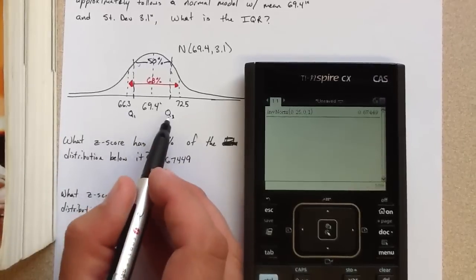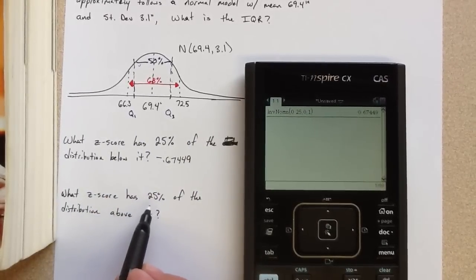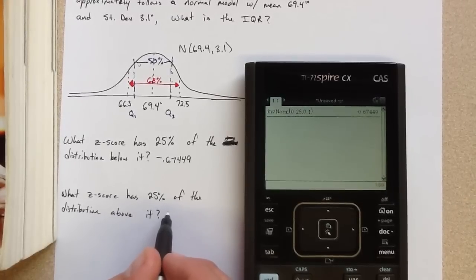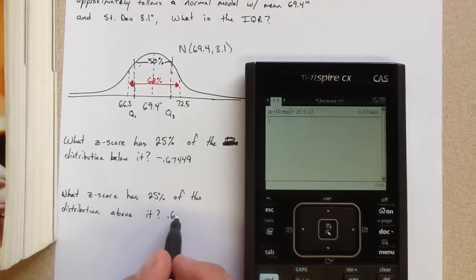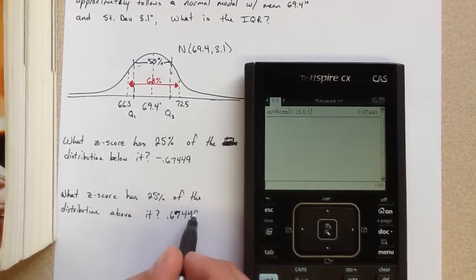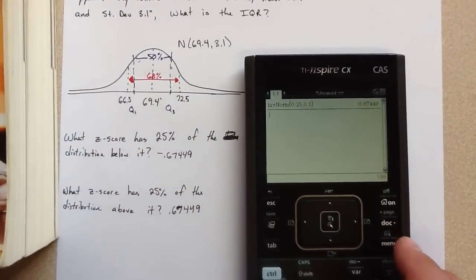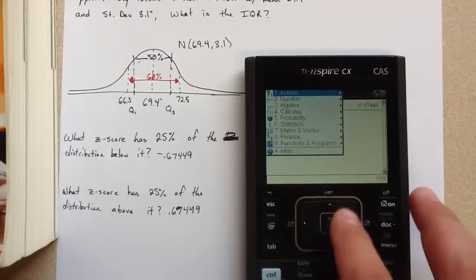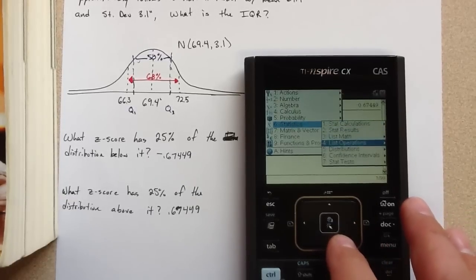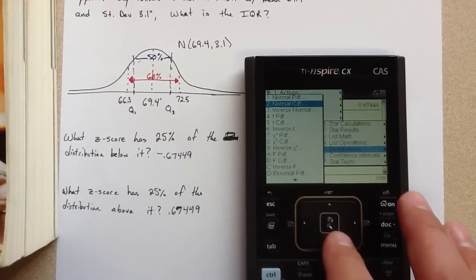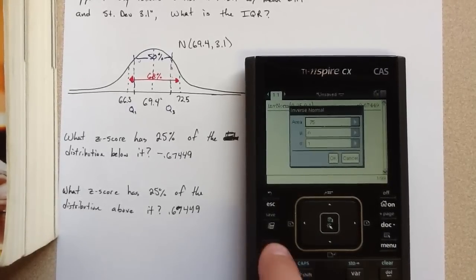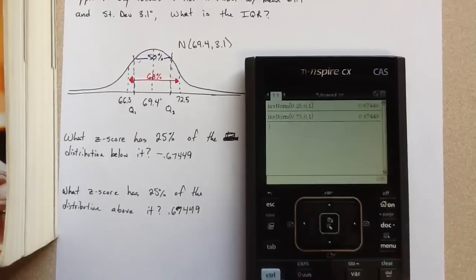And likewise, what would be the z-score for Q3? It has 25% of the data. Now, we don't actually have to go to the calculator for this, because the normal model is symmetric. So that would just be 0.67449. However, on the calculator, we would have to keep in mind that it gives us the shaded region only to the left. So I wouldn't be able to type in 0.25, I'd have to type in 0.75 to get that same value, which I already knew.